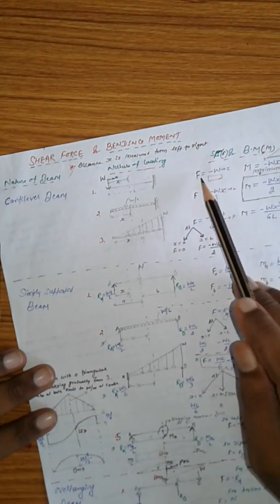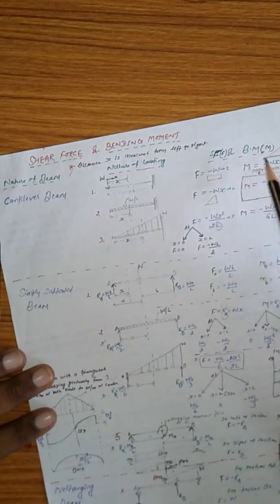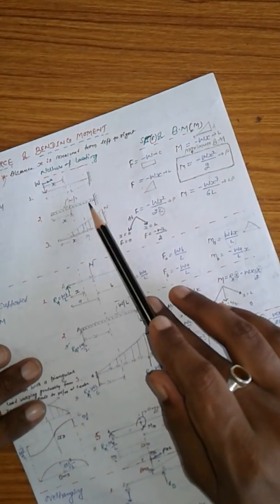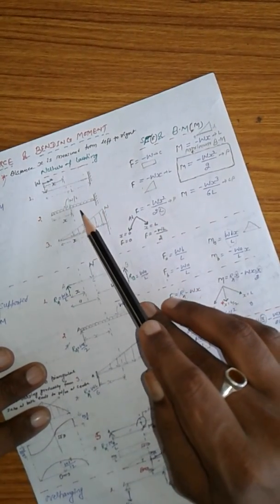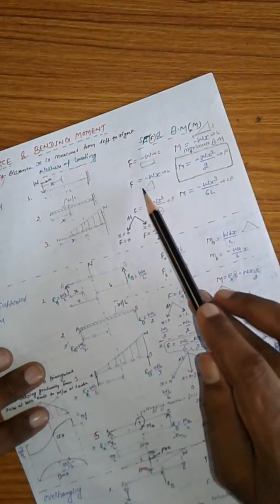In this case, shear force is minus w. This is a general case. Minus w. And bending moment is minus w into x. And second is in cantilever beam, UDL, w per unit length.